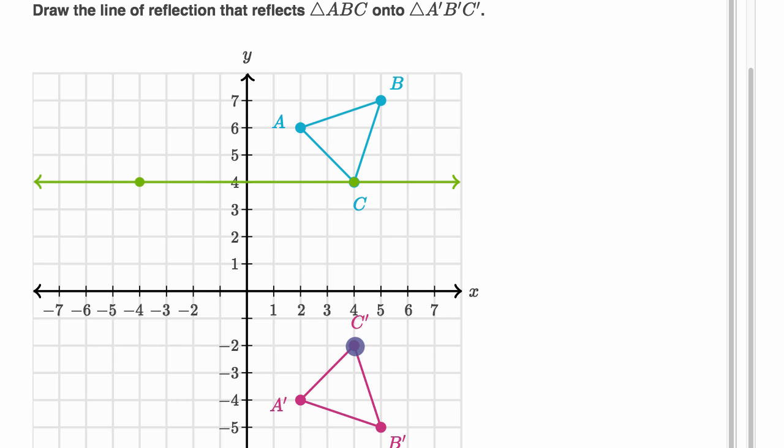So let's see, C and C prime, how far apart are they from each other? If we go one, two, three, four, five, six down, so they are six apart. So let's see if we just put this three above C prime and three below C. Let's see if this horizontal line works as a line of reflection.